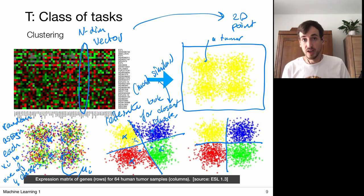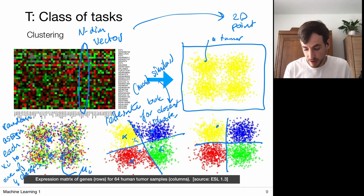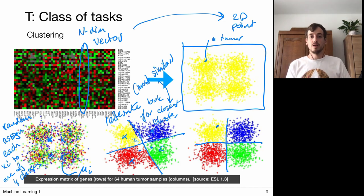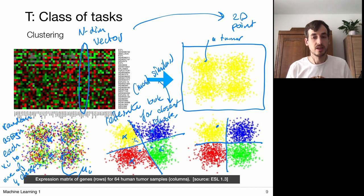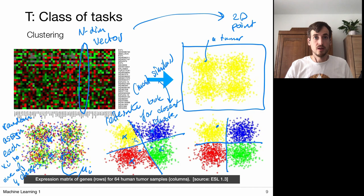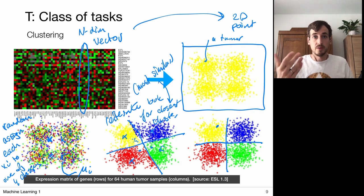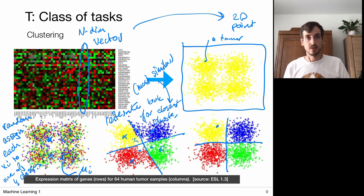Now we are able to say: if a new point comes in, for example this one, it is closest to the yellow class, so we know which kind of tumors are similar. We can use this later in our analysis — if we have to make decisions about treatment, we can look for treatments that were successful on patients in the same cluster. Then it may make sense to use the same treatment for this new type of tumor we just measured.